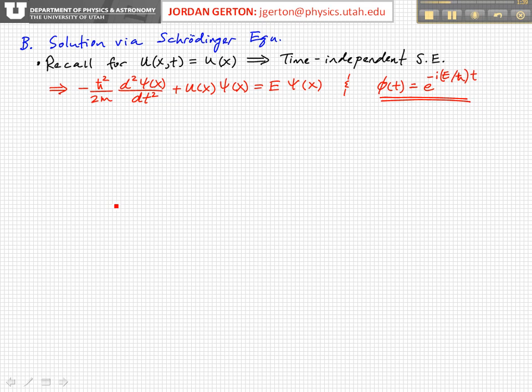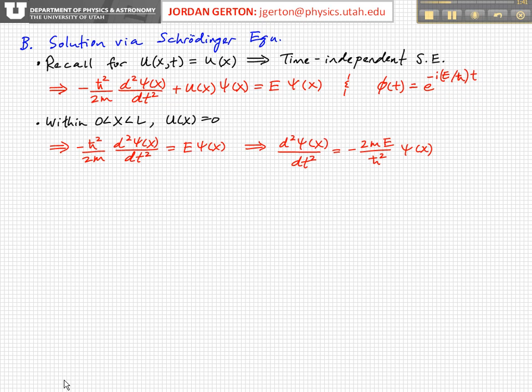So we have this time-independent Schrodinger equation. And again, between the two walls, the potential energy is equal to zero. And so this term just goes away, and we're just left with minus h-bar squared over 2m, d-square psi over dx squared is equal to E psi.